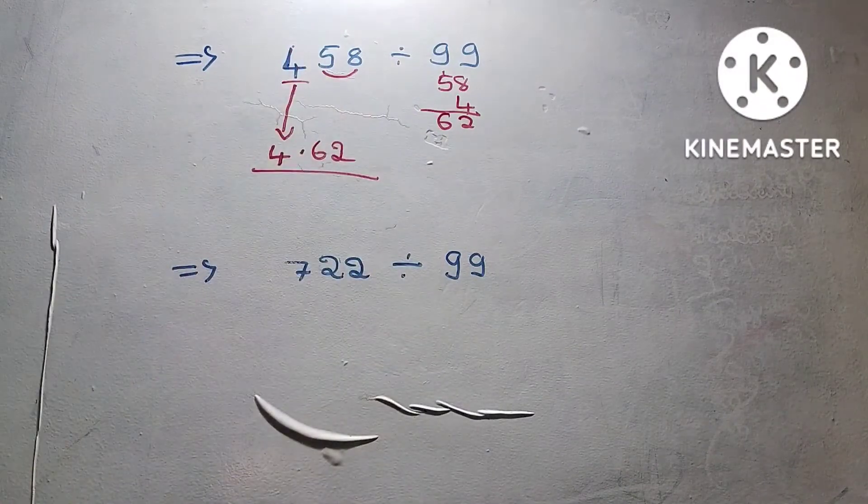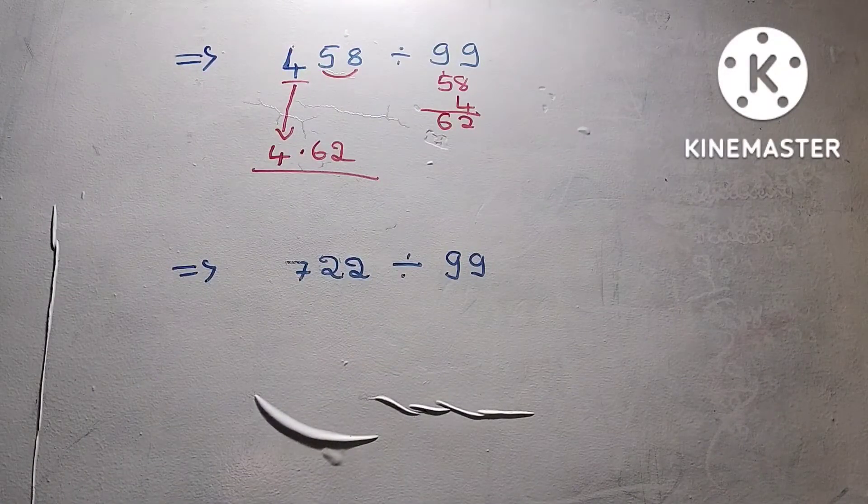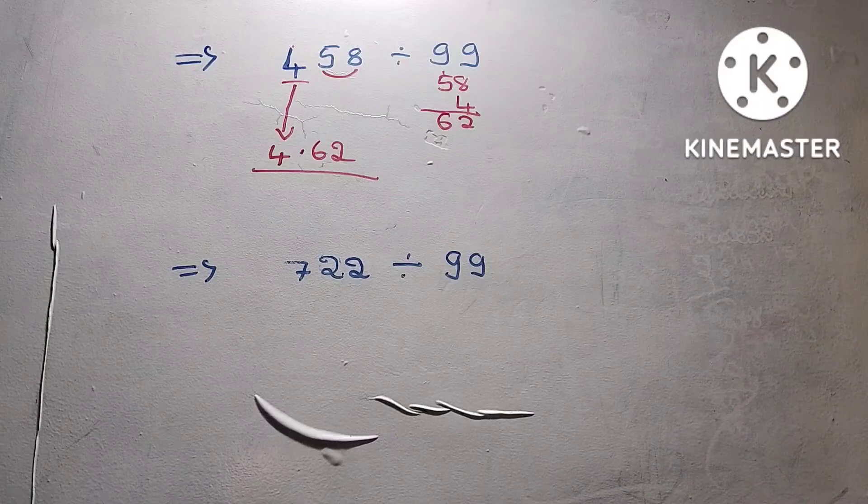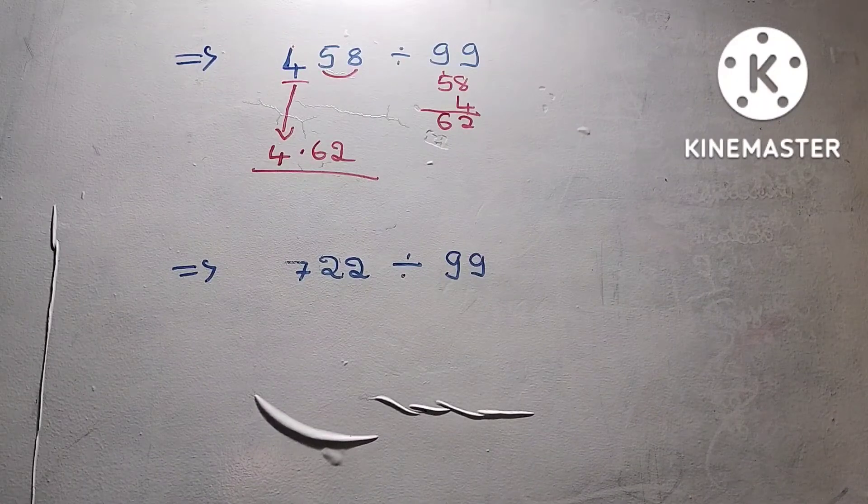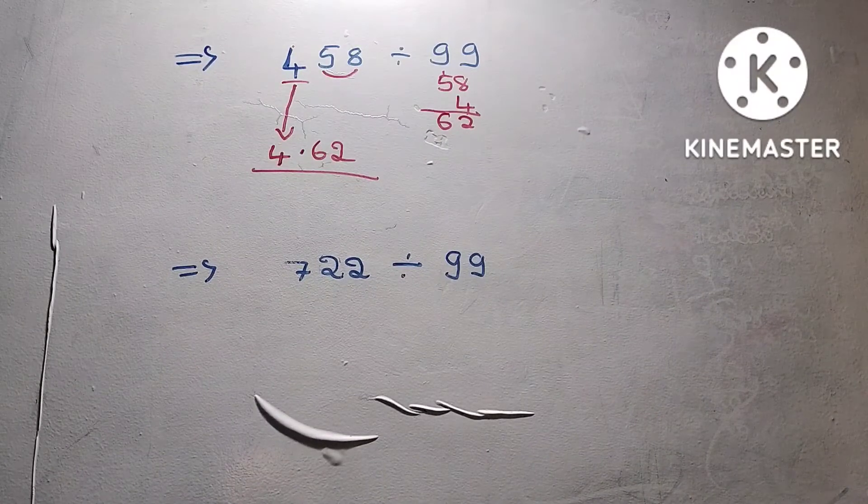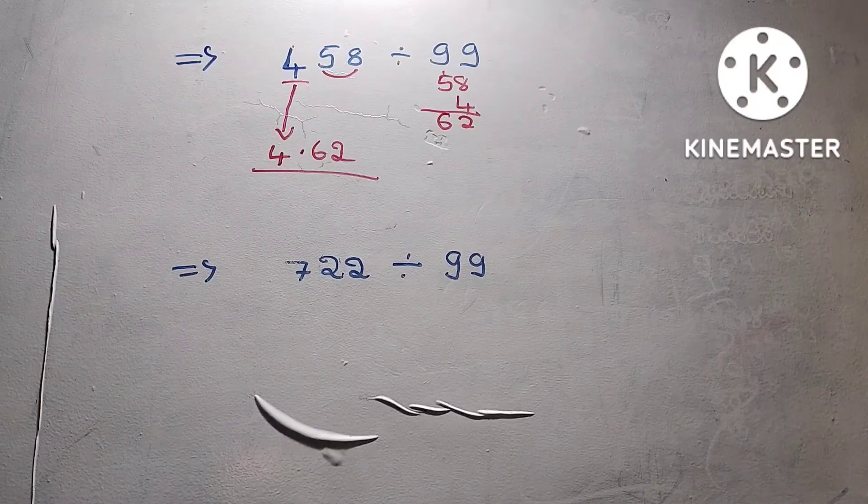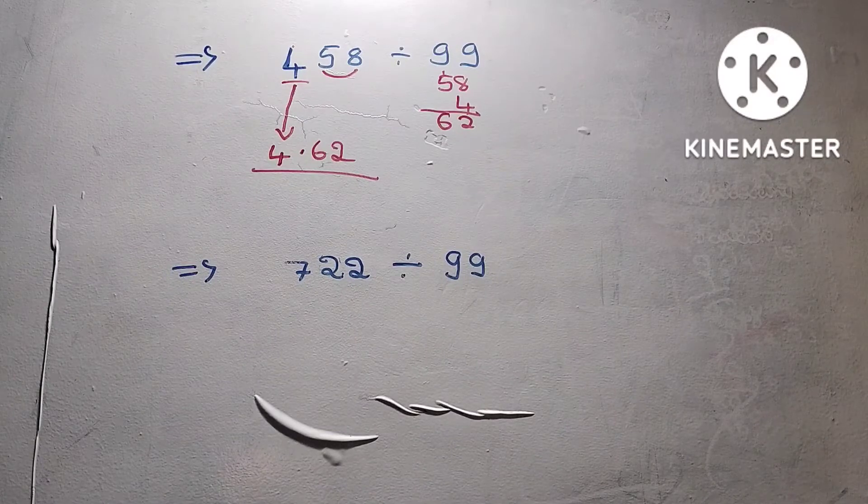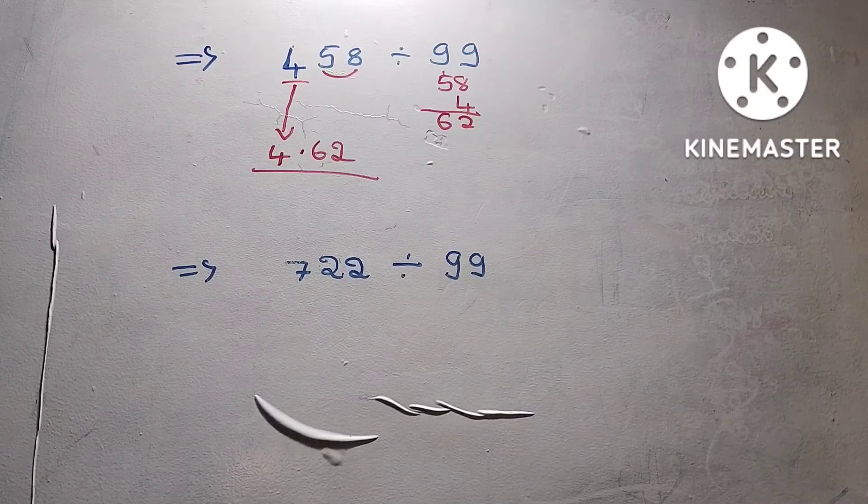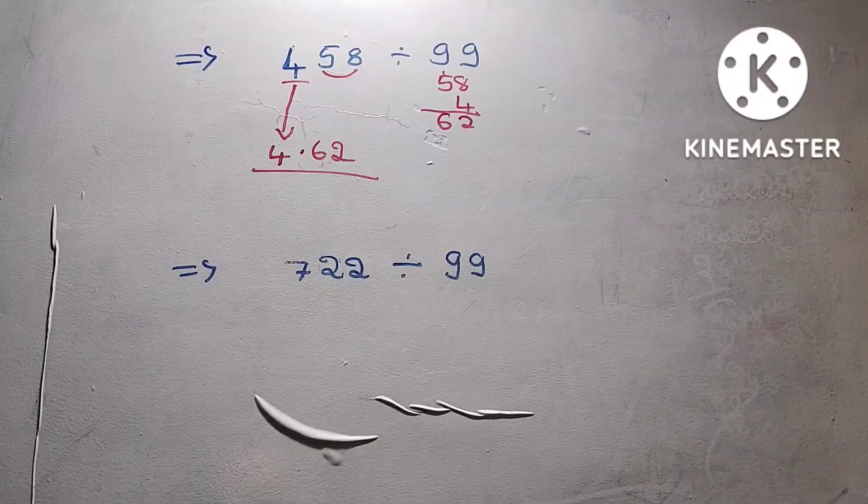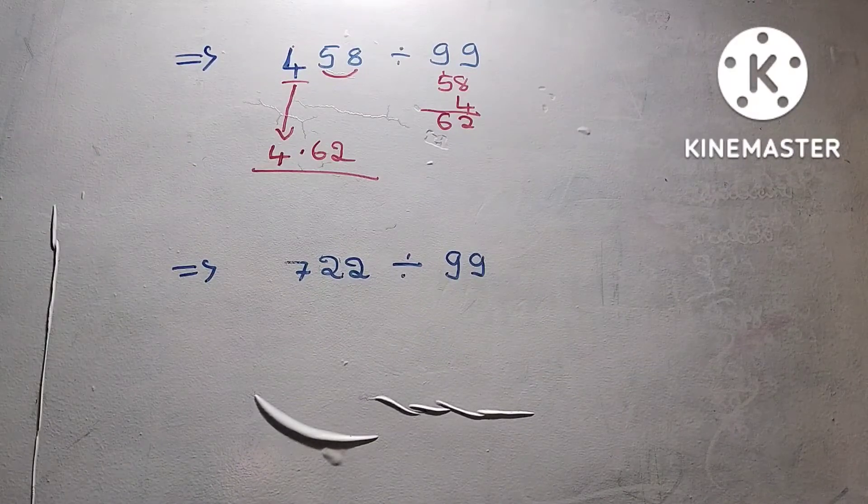The first digit goes before the decimal point. When you have a three-digit number, the decimal point goes after the first digit. Two digits, three digits, four digits, five digits—this is a simple common sense trick.